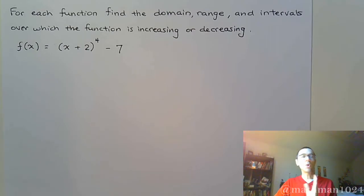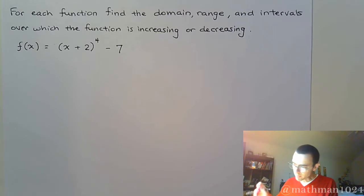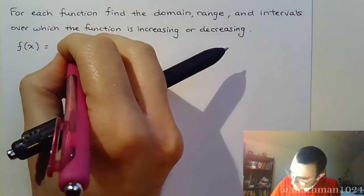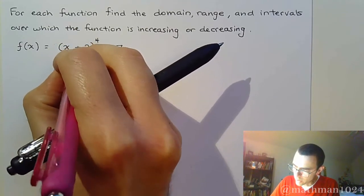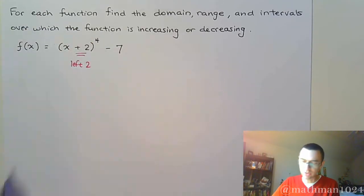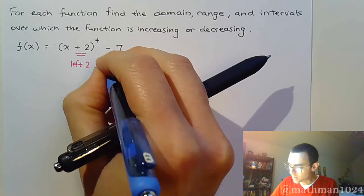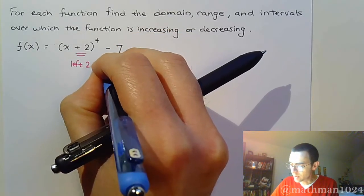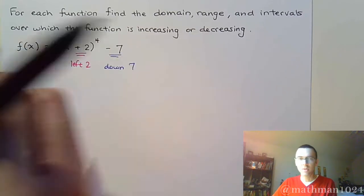I just need to figure out where does it start — how have we shifted this function up, down, left, and right. On the inside we do the opposite of what we see, so that's going to shift it to the left 2. And on the outside we do exactly what we see, which means we're going to go down 7.